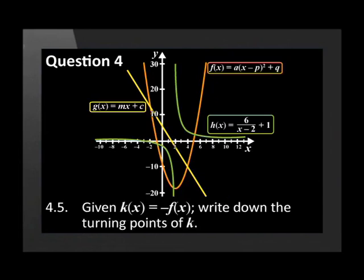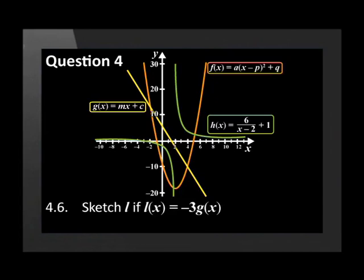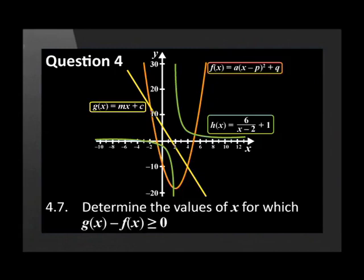Given k(x) is equal to negative x, write down the turning points of k. Sketch l if l(x) is equal to negative 3g(x). Determine the values of x for which g(x) minus f(x) is greater or equal to 0.